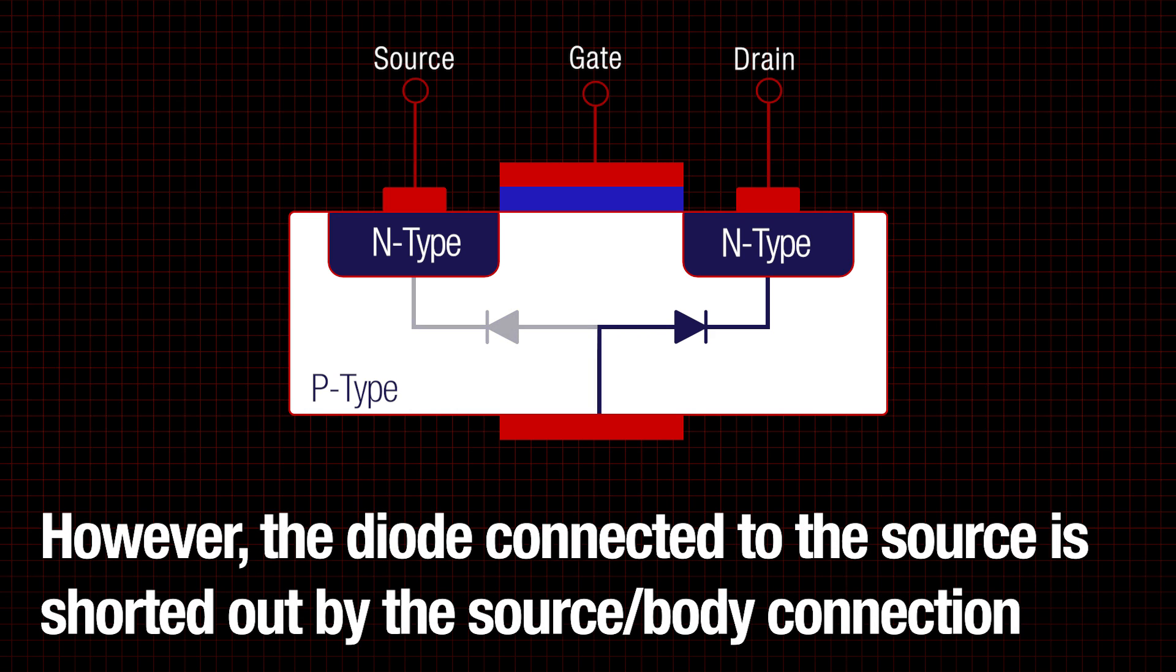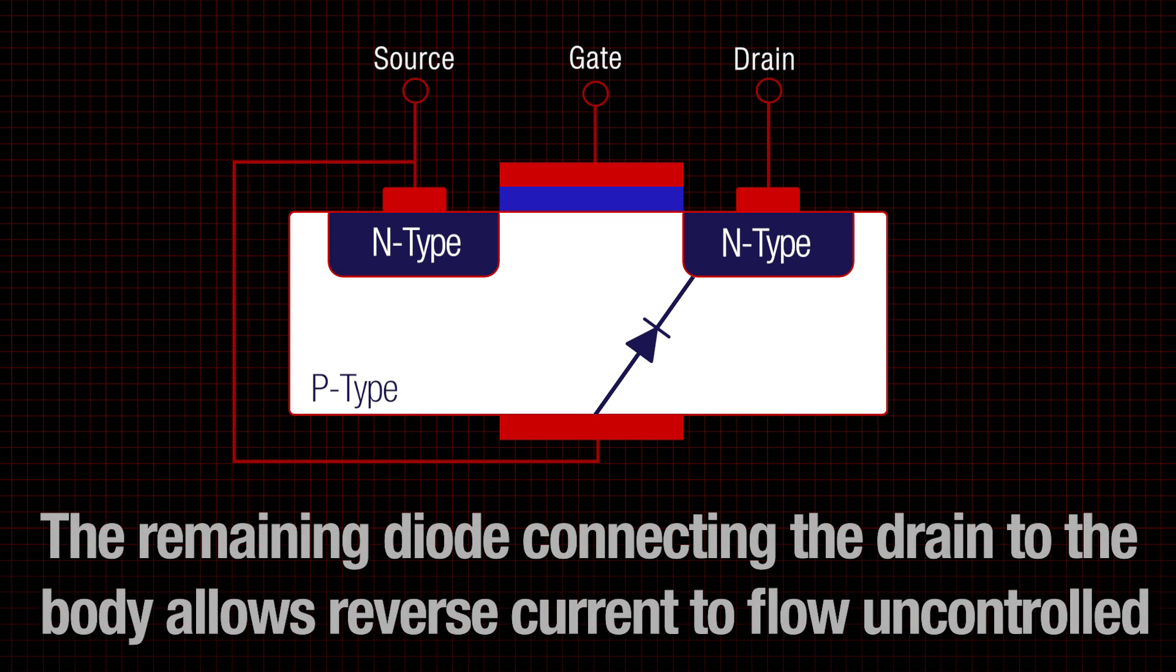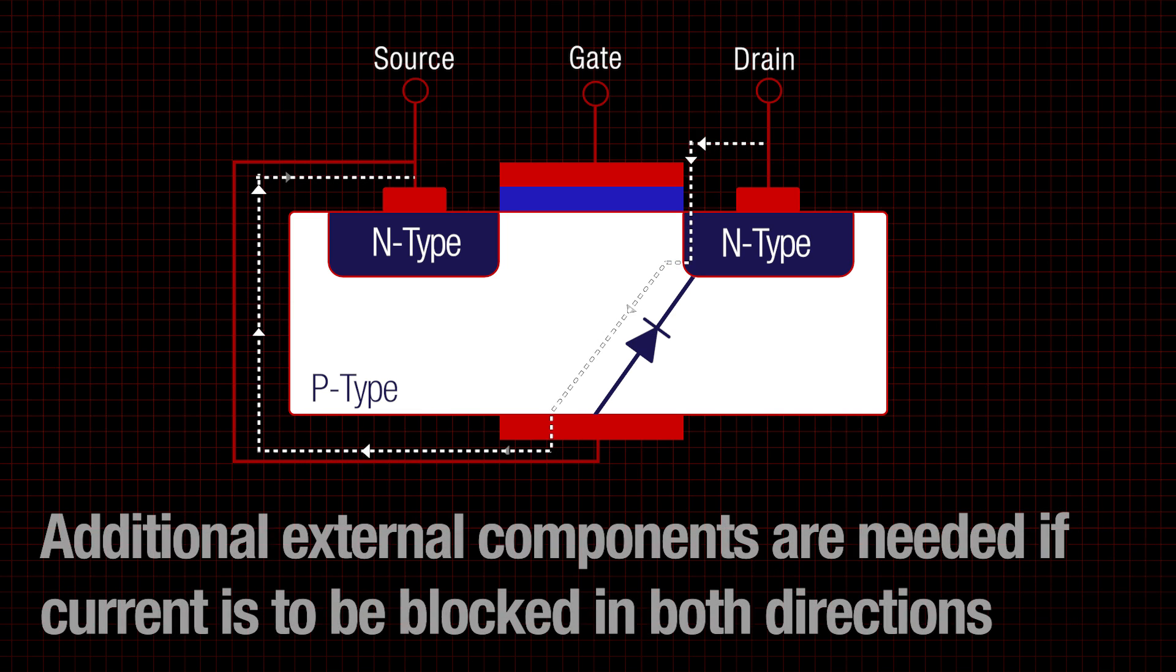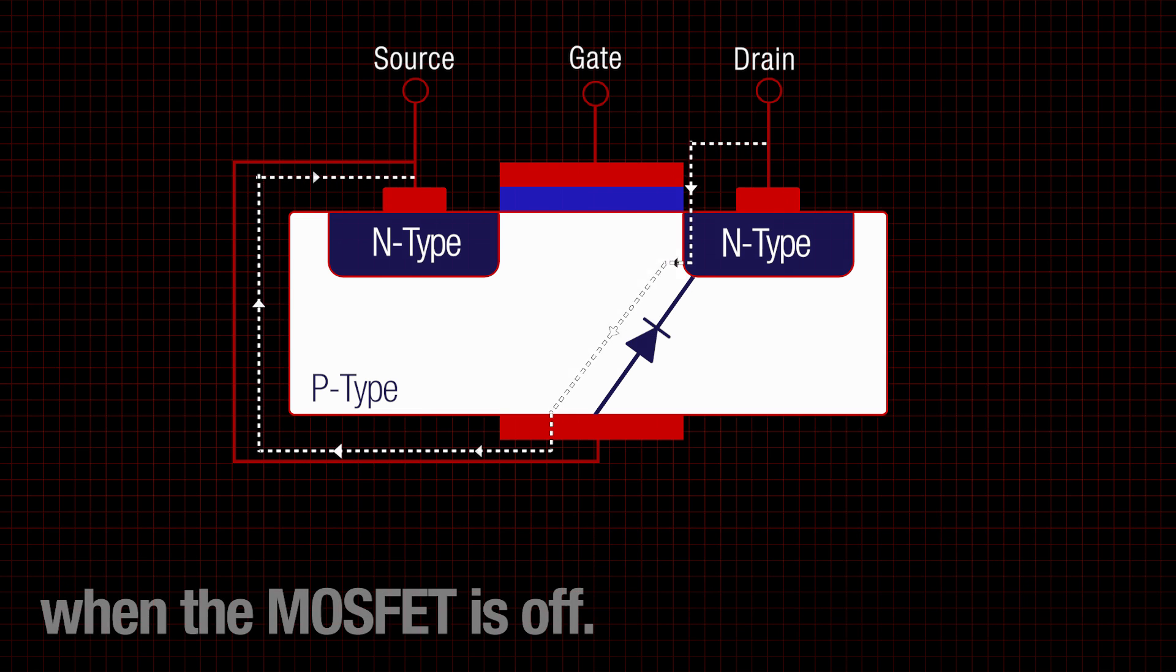However, the diode connected to the source is shorted out by the source body connection discussed earlier and therefore has no effect on the operation of the MOSFET. The remaining diode connecting to the drain of the body allows reverse current to flow uncontrolled from the source to the drain whether the MOSFET is on or off. Additional external components are needed if current is to be blocked in both directions when the MOSFET is off.